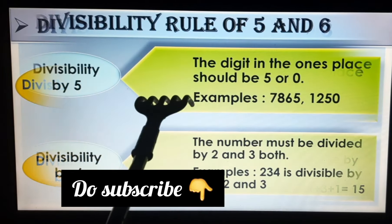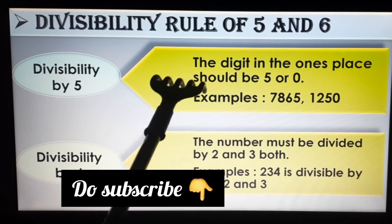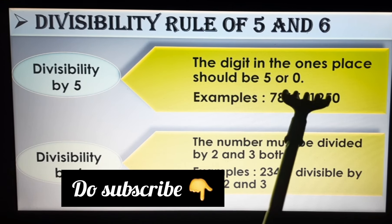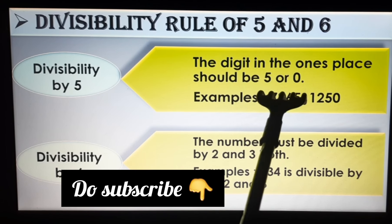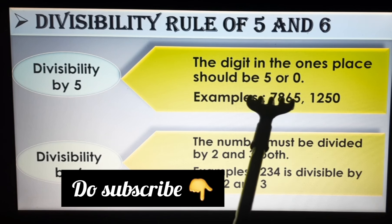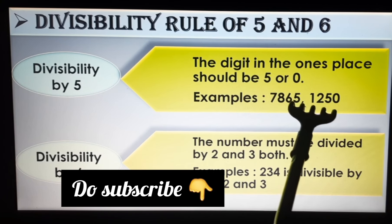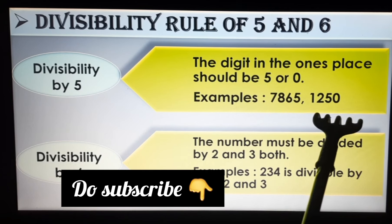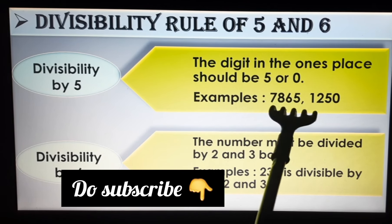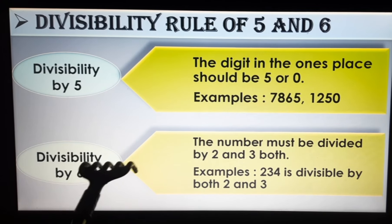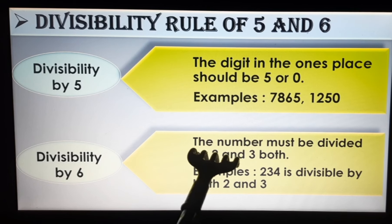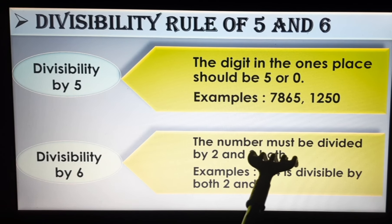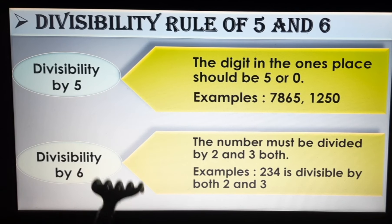Now let's move to the next rules — Divisibility by 5 and 6. For divisibility by 5: the digit in the ones place should be 5 or 0. Either the ones place must have a 5 or a 0. For divisibility by 6: the number must be divisible by both 2 and 3. The given number must be divisible by both 2 and 3 for it to be divisible by 6.